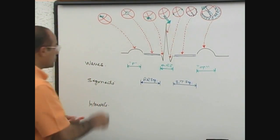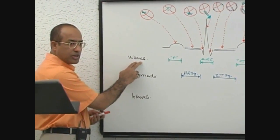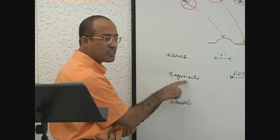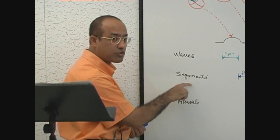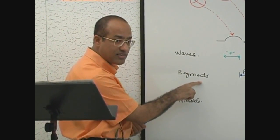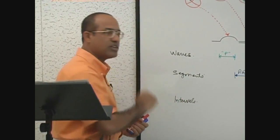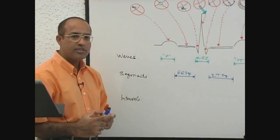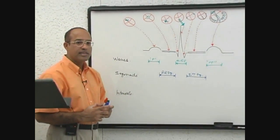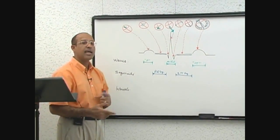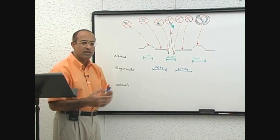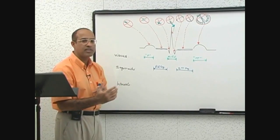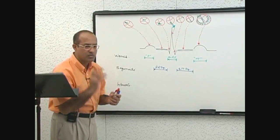We have talked about the waves produced due to fluctuations of the needle, and we have talked about segments which are isoelectric lines. Now let's talk about intervals. Intervals are the sum of some waves and segments — more than one wave together, or some wave plus a segment, is called an interval.